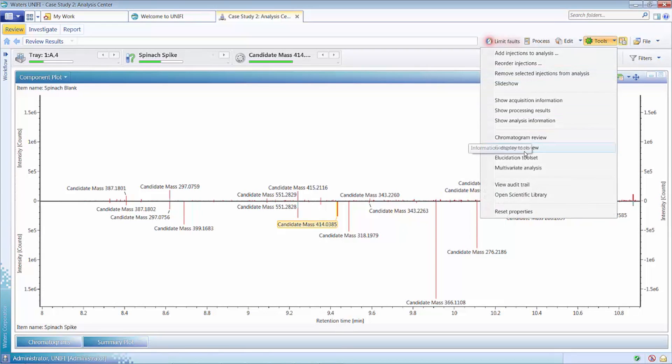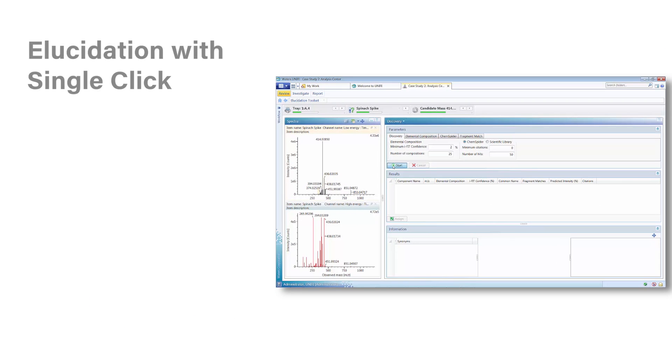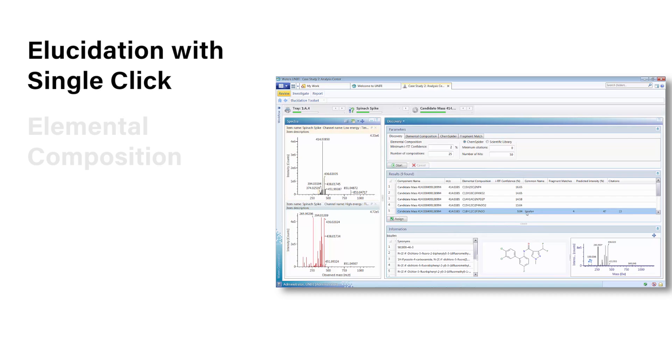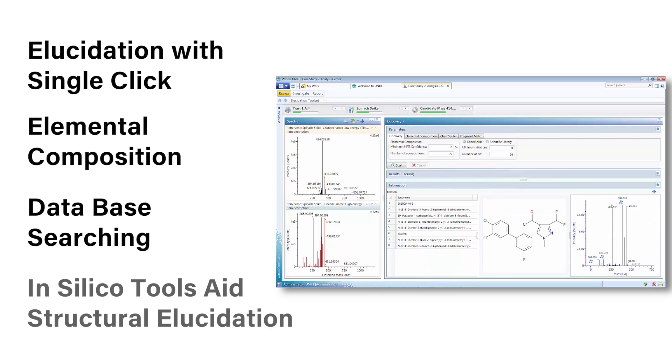A comparison between two samples can be made and differences identified. The elucidation steps are performed with a single click and include elemental composition, database searching, and use of in silico tools to aid structural elucidation.